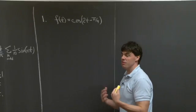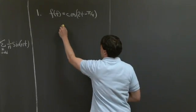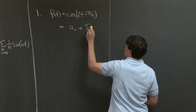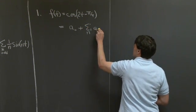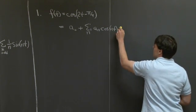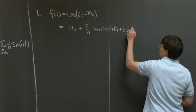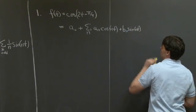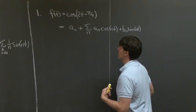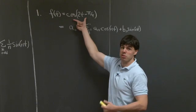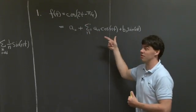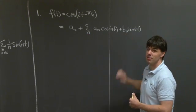So in this class, when we say find the Fourier series, what we're really looking for are coefficients a0, an, and bn, such that we can write our function out as a sum of sines and cosines with these values an and bn. Now, what we could do is we could take this function, plug it into the integral formulas, and compute using the integrals the values a0, an, and bn.